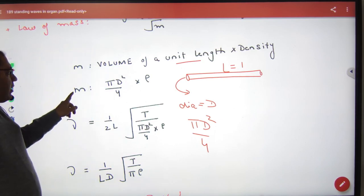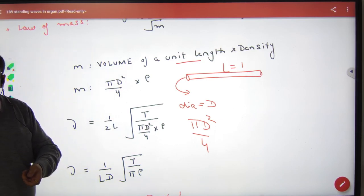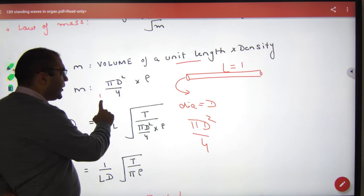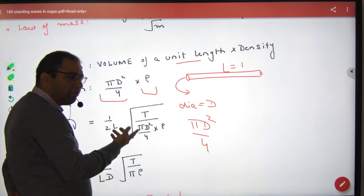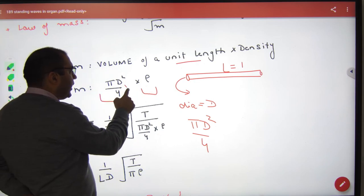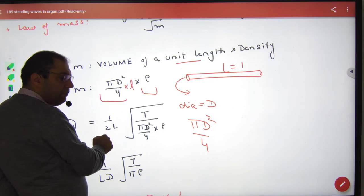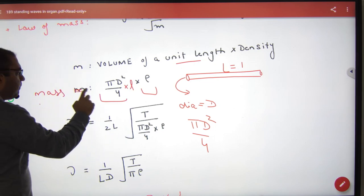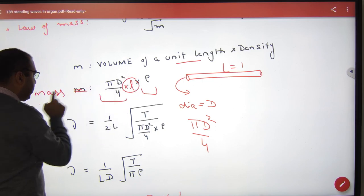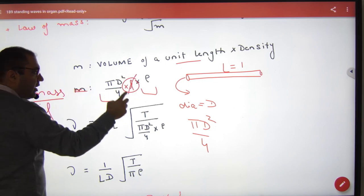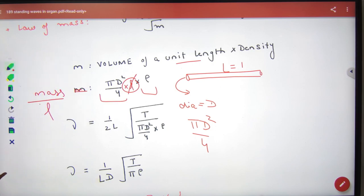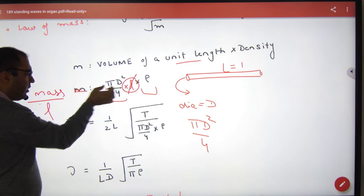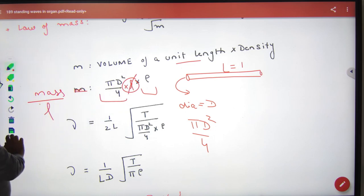So in this case, M means mass per unit length. Volume into density. Volume is area into length into density. But because we have mass per unit length, the length becomes 1. Mass is volume into density, where volume is area times length.